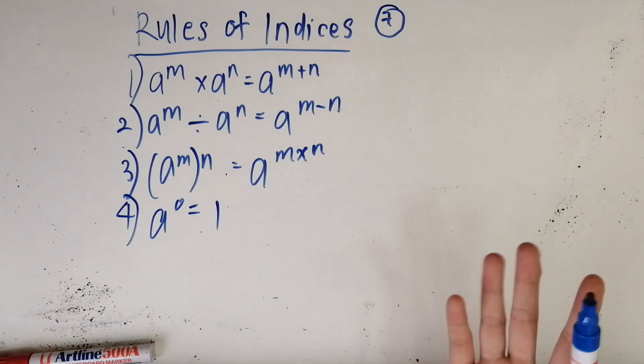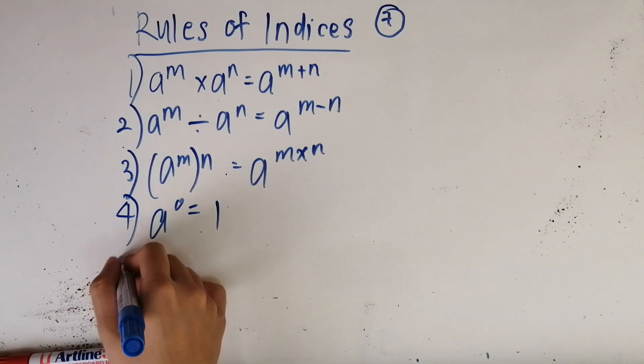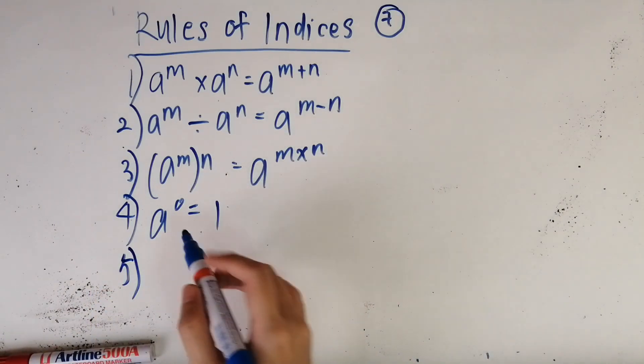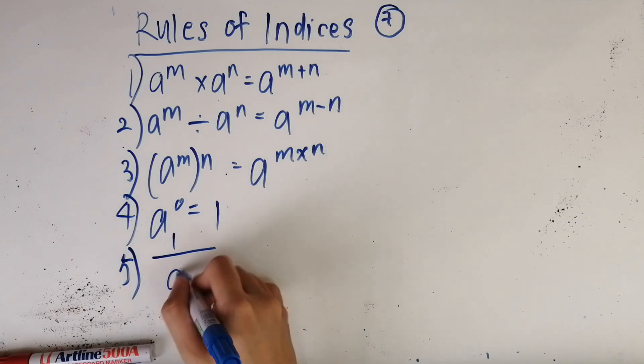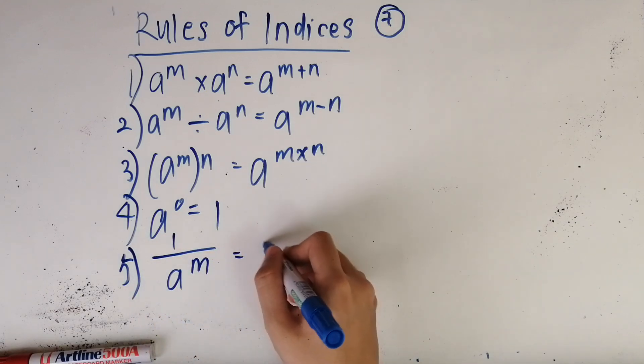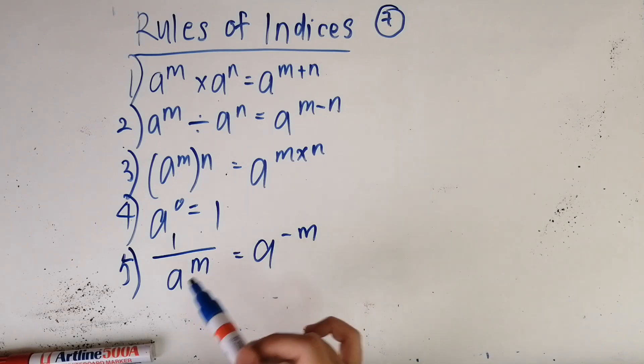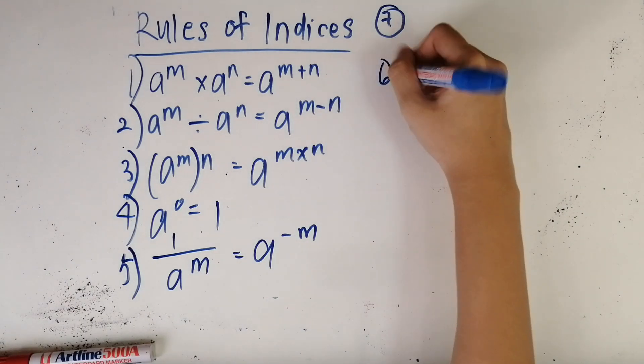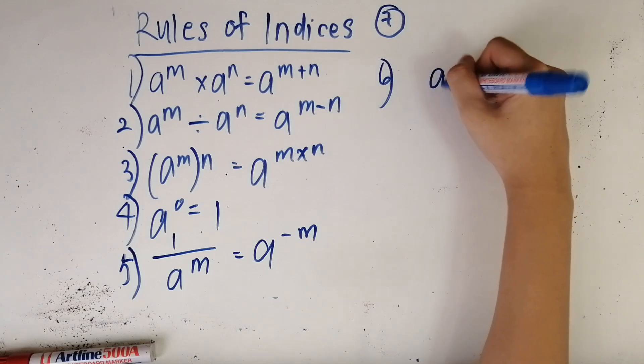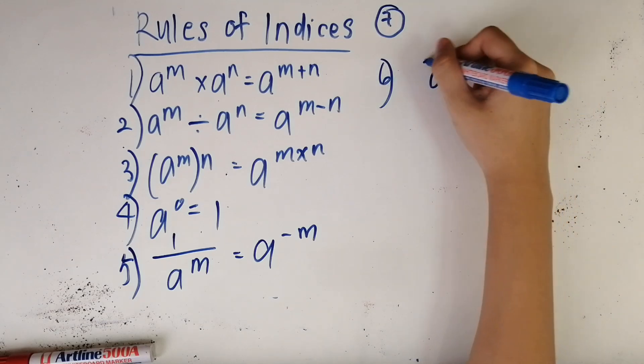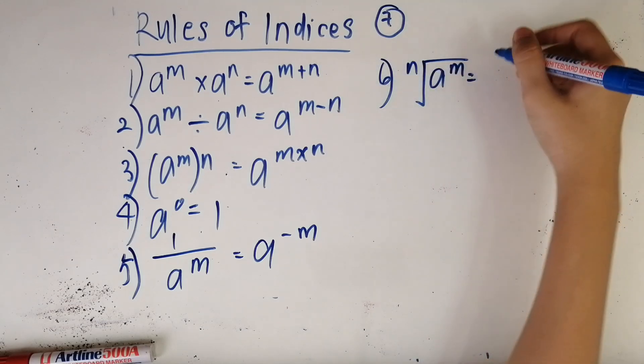Number five: a^(-m) equals 1 over a^m. So when you bring the power up it will eventually become negative. And the sixth rule is the nth root of a^m goes to a^(m/n).